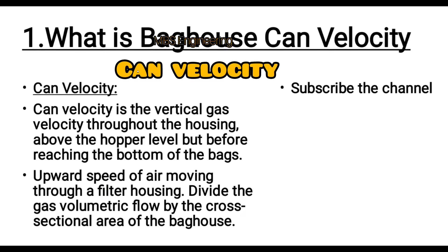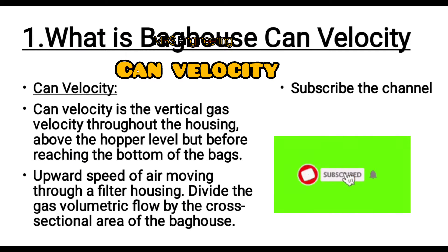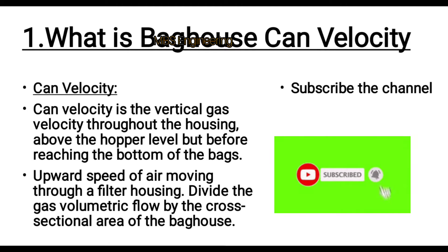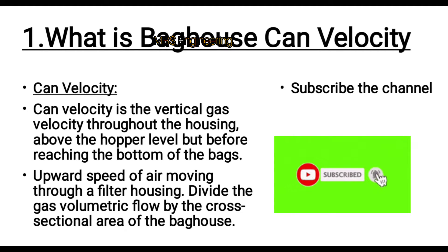First, we are going to understand about the can velocity. Can velocity is the vertical gas velocity throughout the housing, above the hopper level but before reaching the bottom of the bags — the upward speed of air moving through a filter housing. It is calculated by dividing the gas volumetric flow by the cross-sectional area of the bag house.